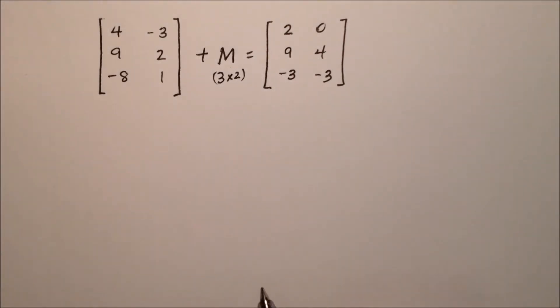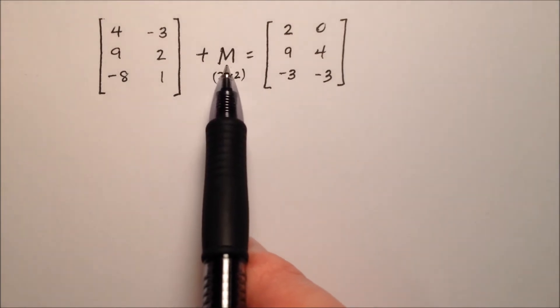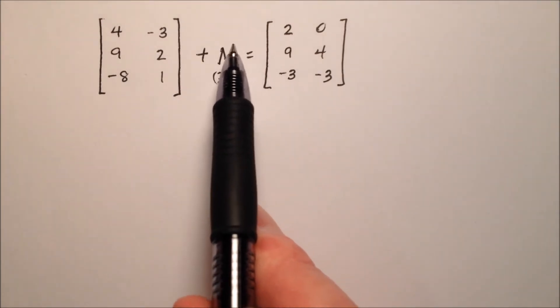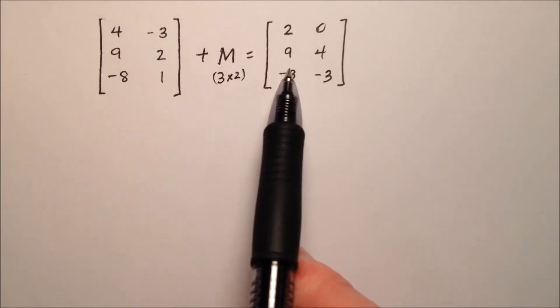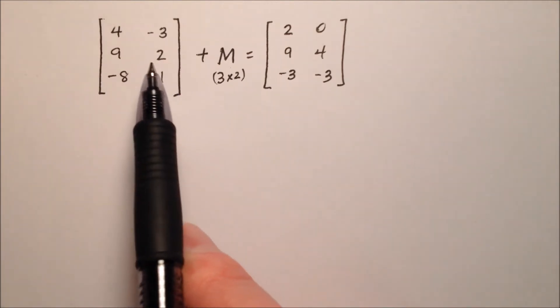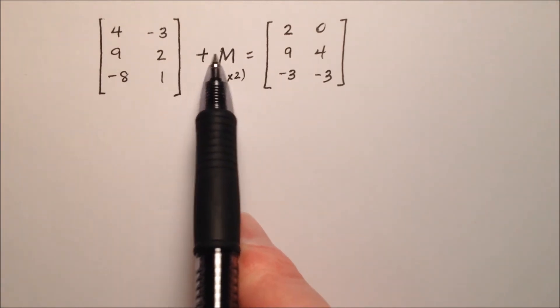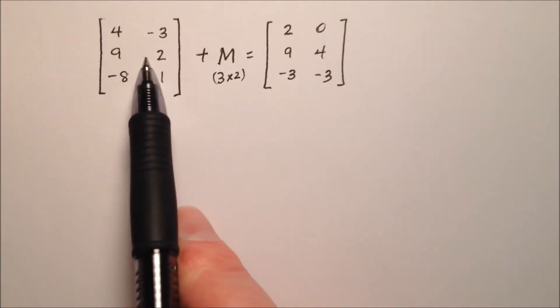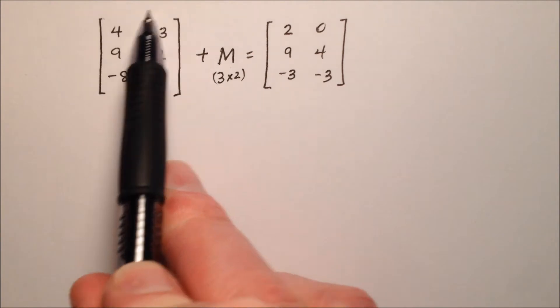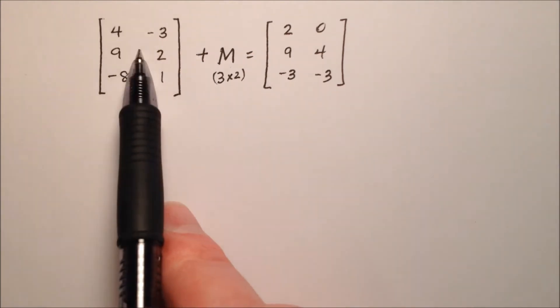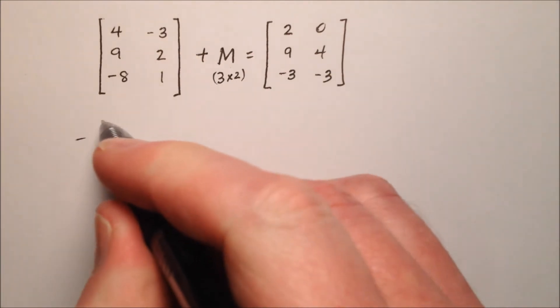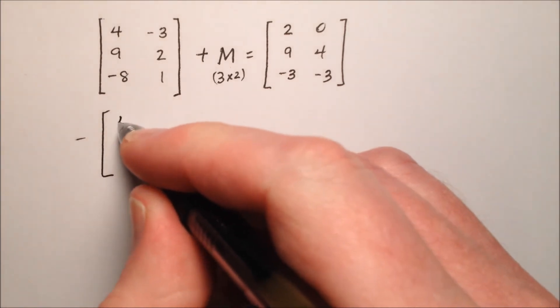So really what it means to solve for a variable here or a missing value, we need to isolate it by using our properties of equality, just like we learned about in Algebra 1. So if I know this matrix is being added to this matrix, and I'm trying to isolate this variable, I need to subtract this guy from this side. I've got to get rid of him. So I'm going to put him over here by subtracting him from both sides.